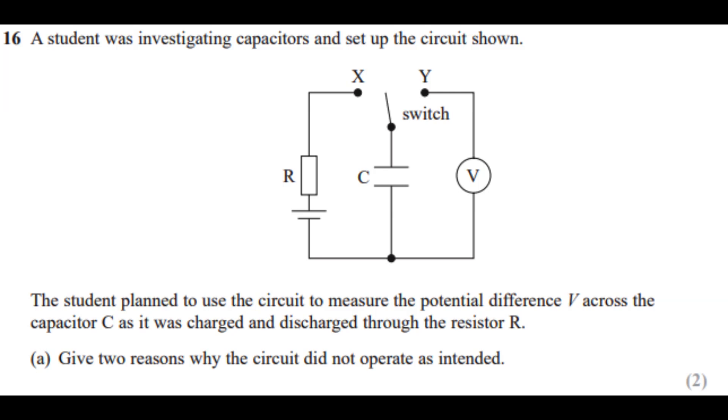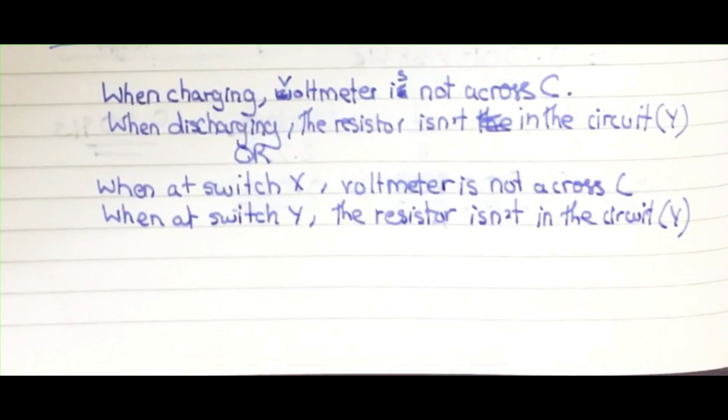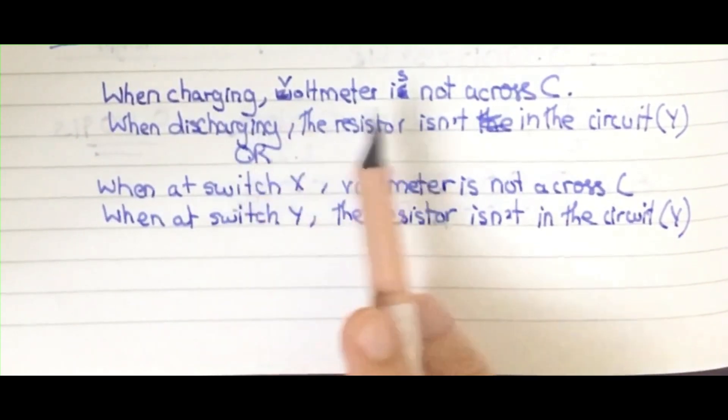Or you can write it as: when charging, the voltmeter wasn't there, and when discharging, the resistor wasn't there. Let me write the sentence for you. Okay, I have written the sentence for you.